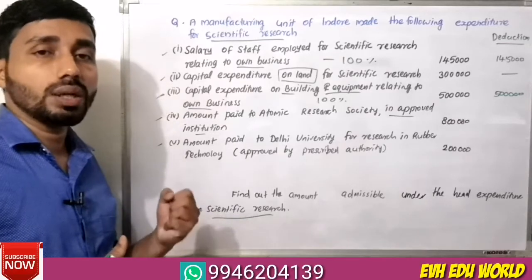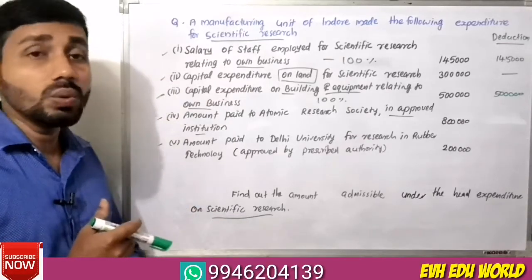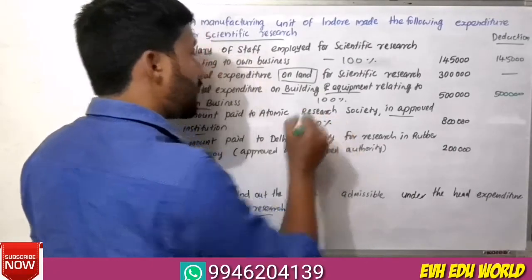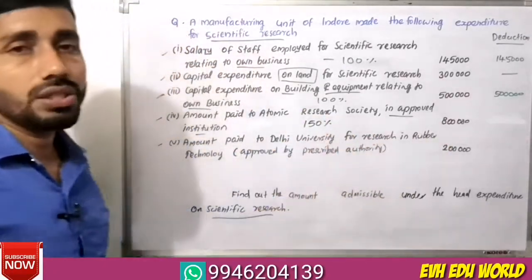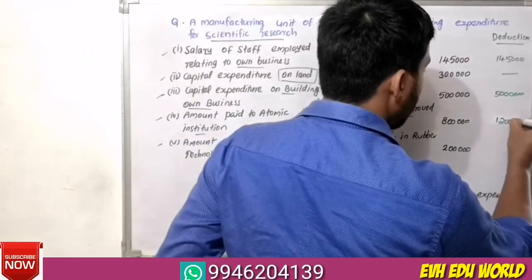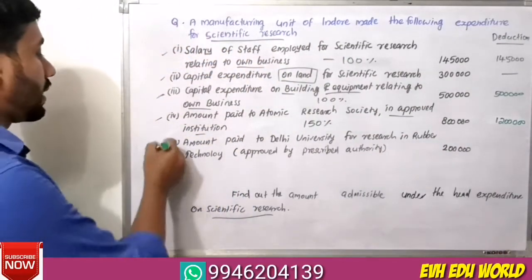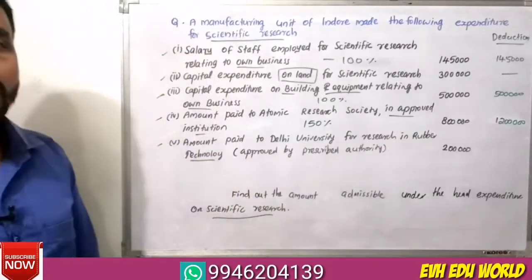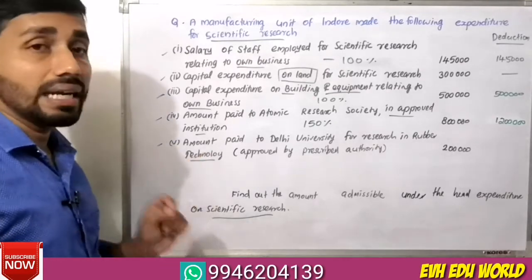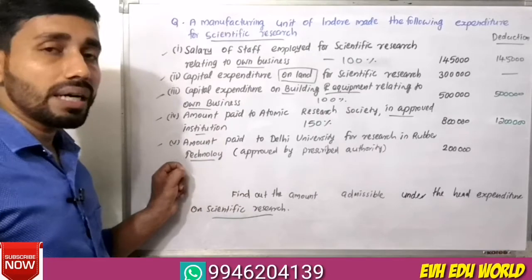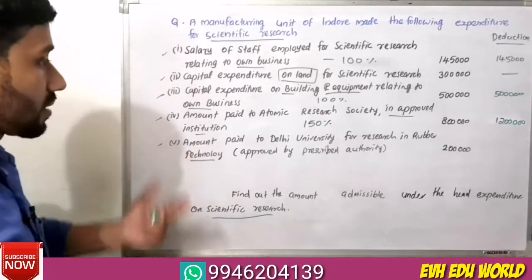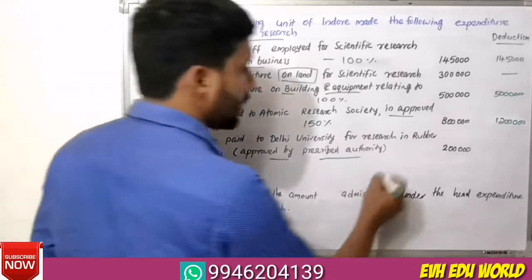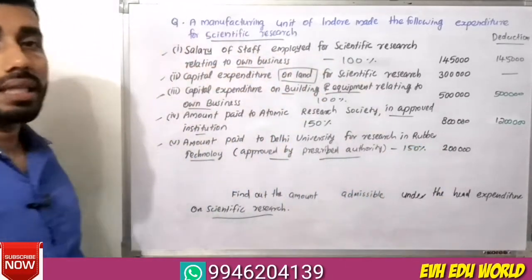For an approved institution, the deduction relating to scientific expenditure is 150%. Regarding the amount paid to Delhi University for research in rubber technology, this is a contribution approved by the prescribed authority, so the rate applicable is 150% deduction.